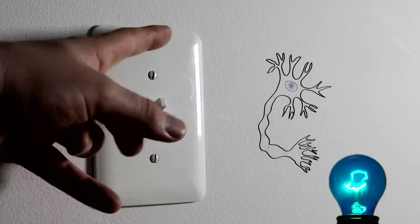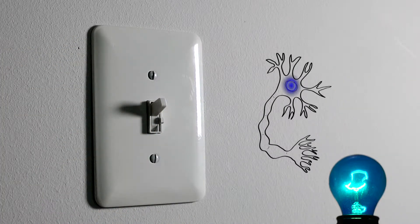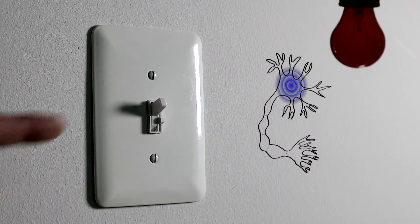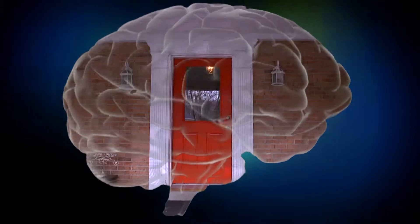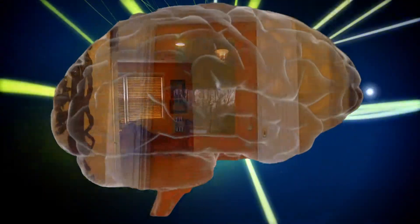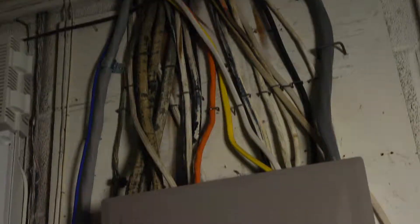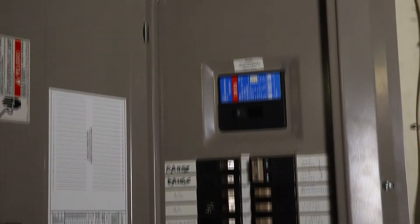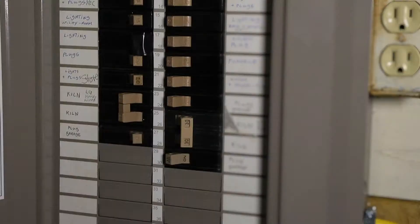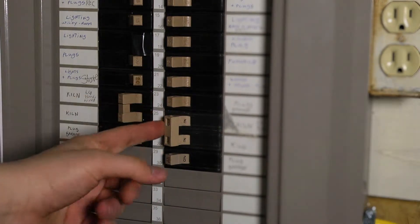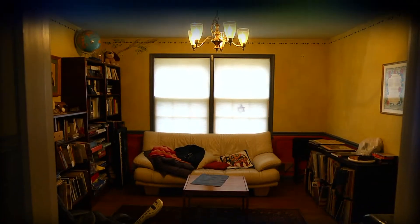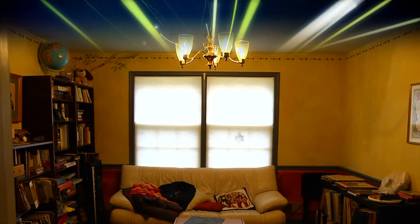Blue light turns on target neurons without affecting surrounding cells. Orange light turns them off. Think of the brain like the electrical circuits in your home. To identify the function of each circuit or type of neuron, you could individually turn each circuit on and off to see which electrical outlets or behaviors they each control.